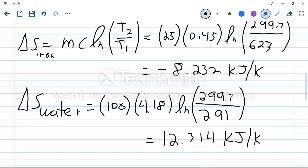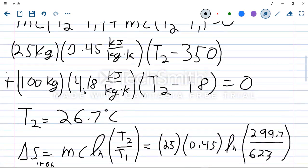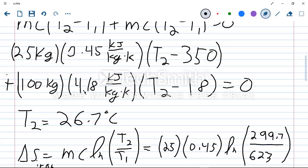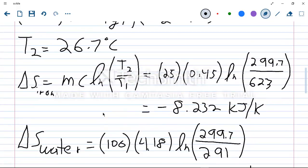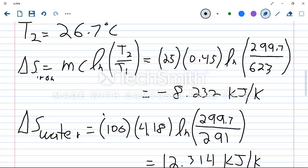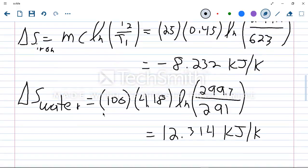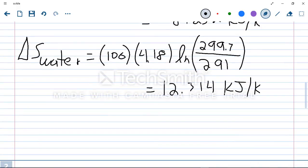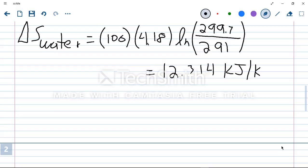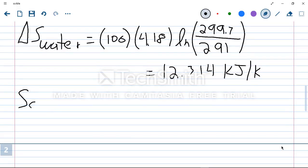We started by calculating our final temperature using our energy balance. So we know that both entities, the block and the water, will end at the same temperature at 26.7 degrees Celsius. Then we calculate the entropy change using constant specific heat, because liquids and solids are incompressible. We know the entropy of the iron goes down, and the entropy of the water goes up. So we can then apply our entropy generated formula, being S_gen is equal to the change in entropy of the iron plus the change in entropy of the water.